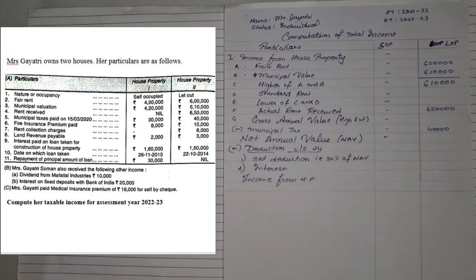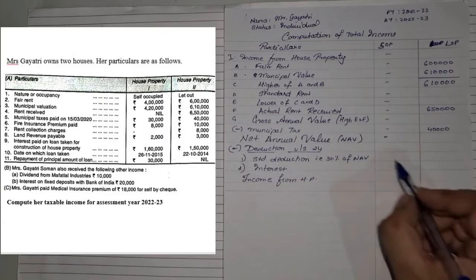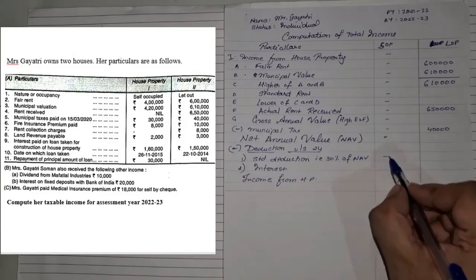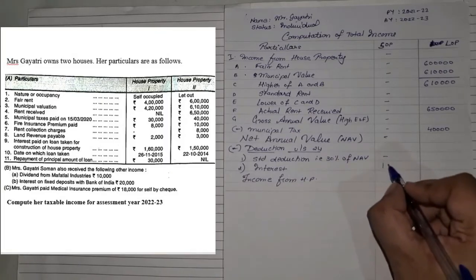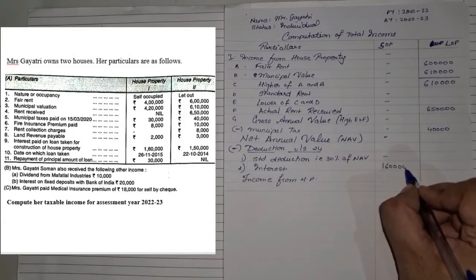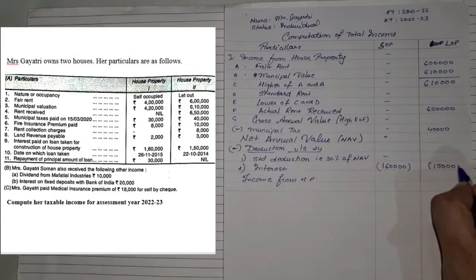After that, they've given fire insurance — nothing to do in the sum, there's no place for fire insurance. Land revenue also doesn't have any place. Interest paid on loan taken for construction of house — yes, that is the only thing which will appear on both the sides. So that will be negative 1,60,000 and negative 1,50,000, since they come under deductions.